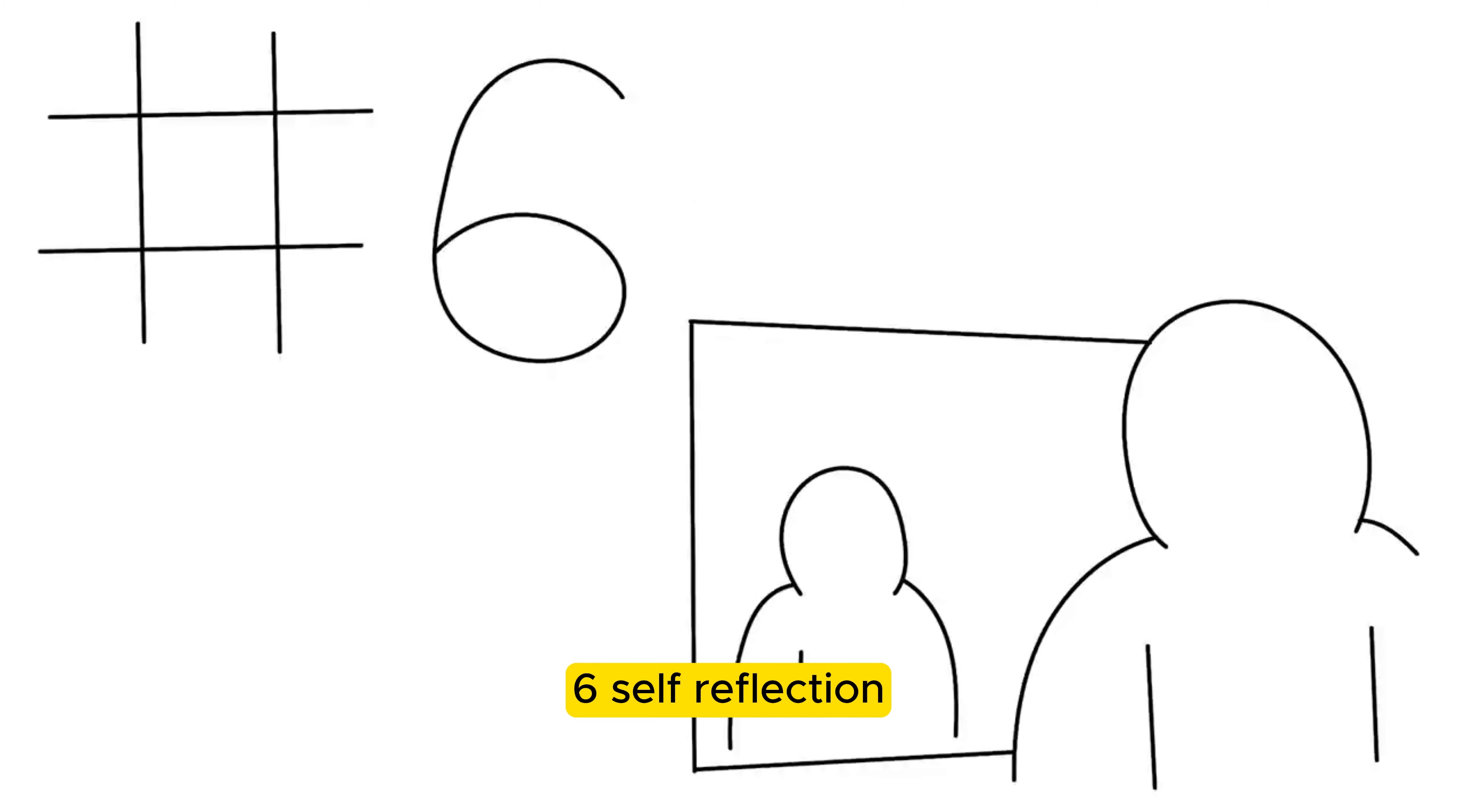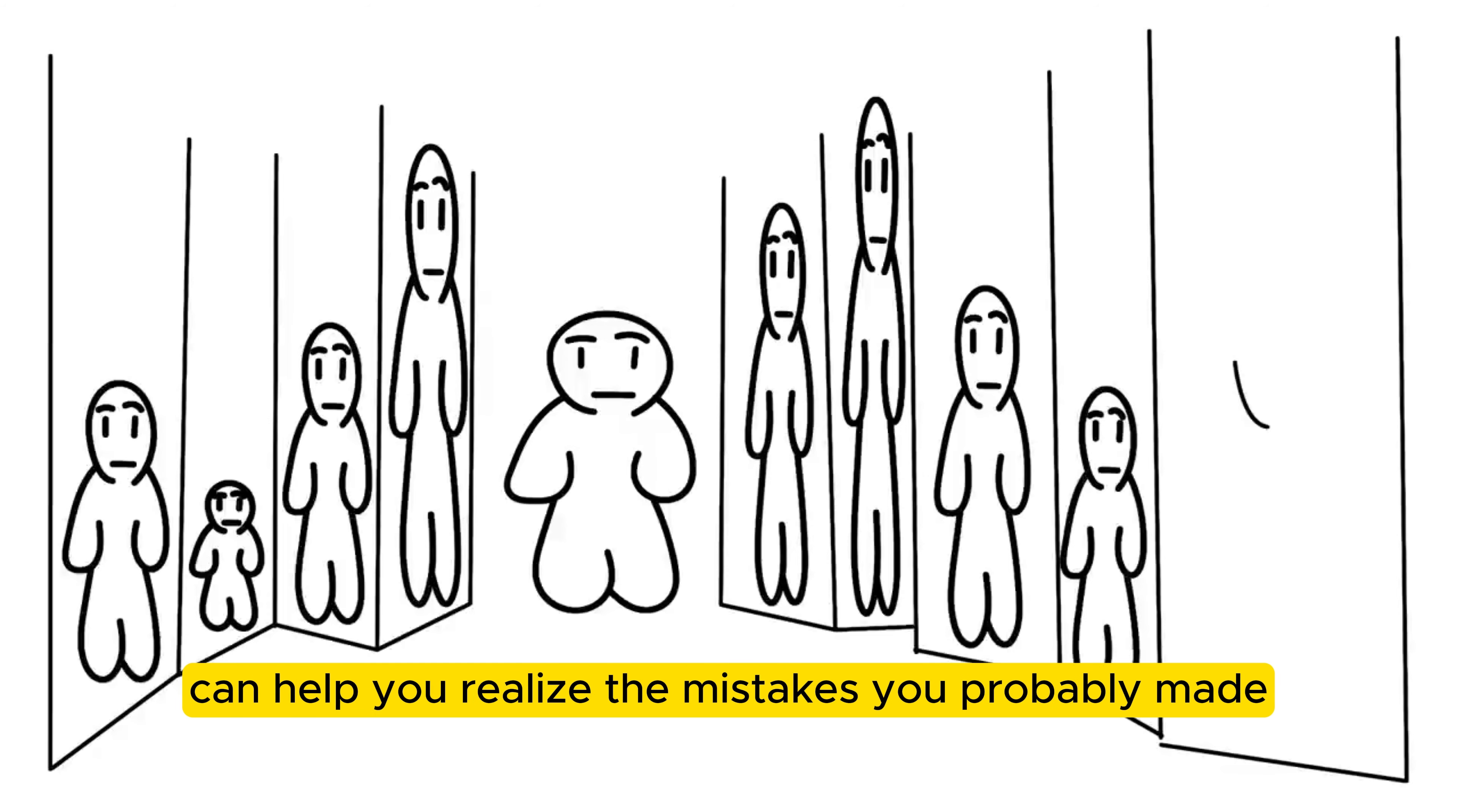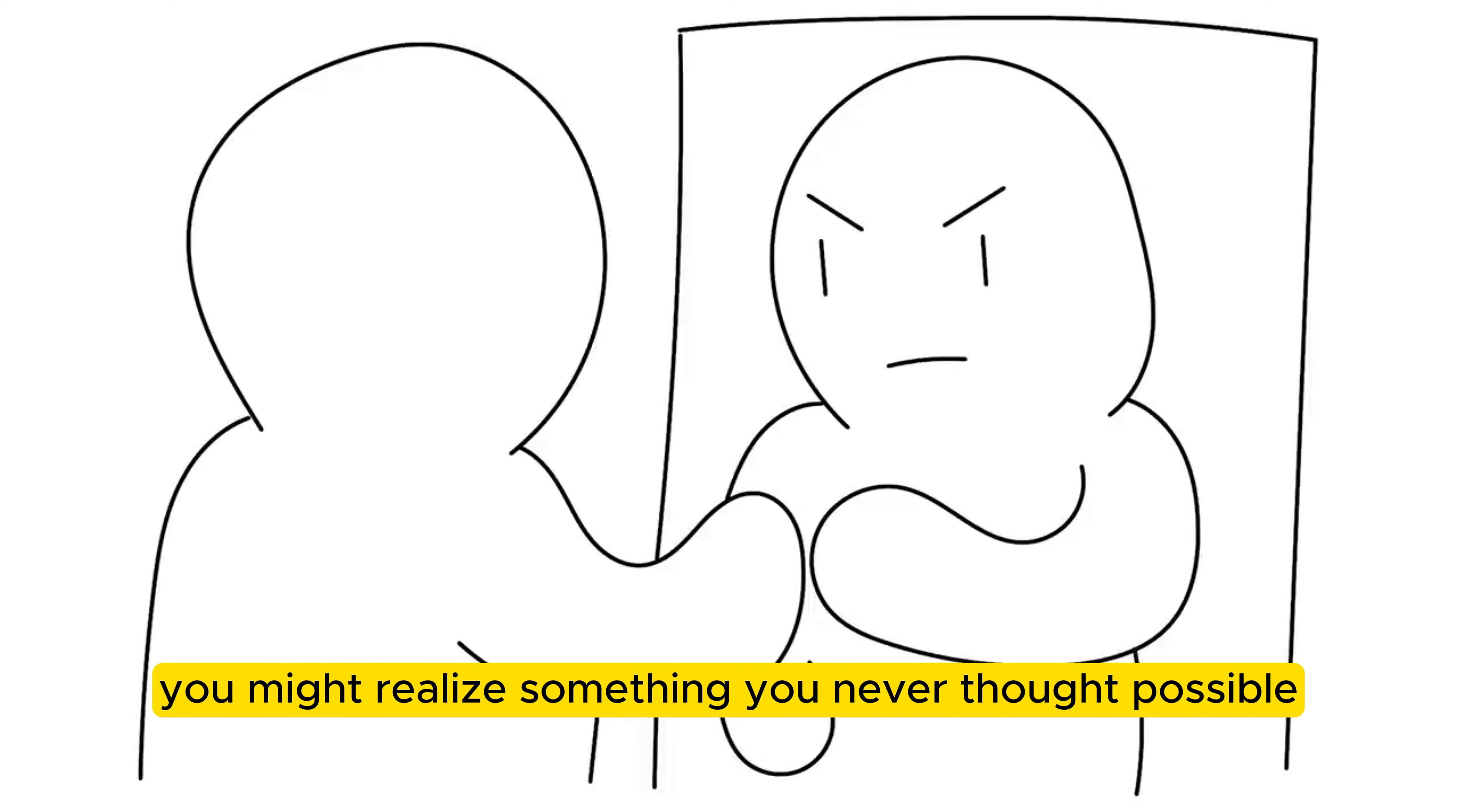6. Self-reflection. Even if you're enjoying each other's company, something probably went wrong along the way. Thinking of the reasons why the relationship failed can help you realize the mistakes you probably made and help you understand where and why the relationship didn't work out. This can also help avoid making the same mistakes in future relationships. By this time, it is important to take good care of yourself. Take a look in the mirror and learn more about yourself. You might realize something you never thought possible.